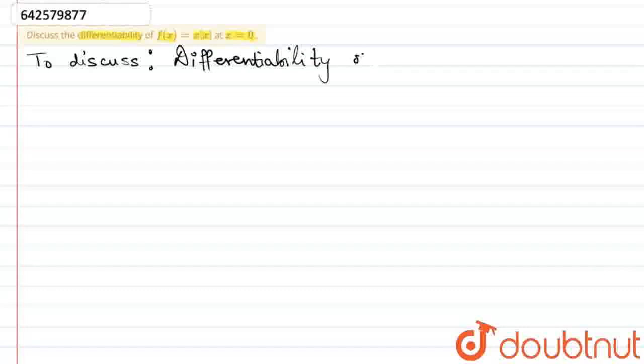Hello everyone, let's start the question. The question says, discuss the differentiability of f(x) equals x mod x at x equals 0. We are supposed to discuss the differentiability, that is, whether the function is differentiable or not, of the function f(x) equals x mod x at a given point, that is, x equals 0.